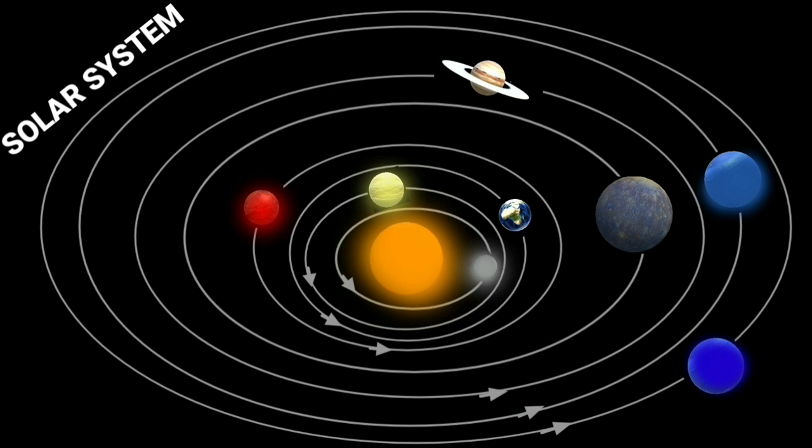Children, there are some other bodies which revolve around the sun. They are also members of the solar system. Let us learn about some of them.